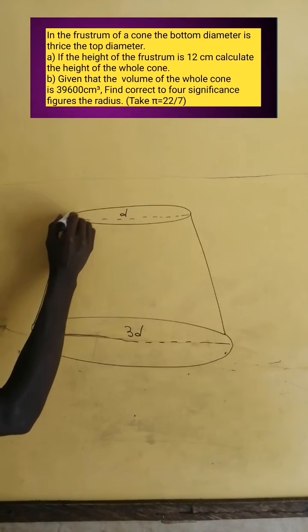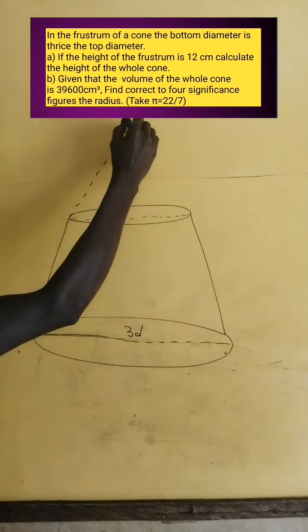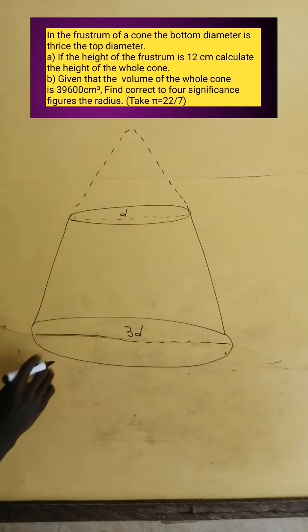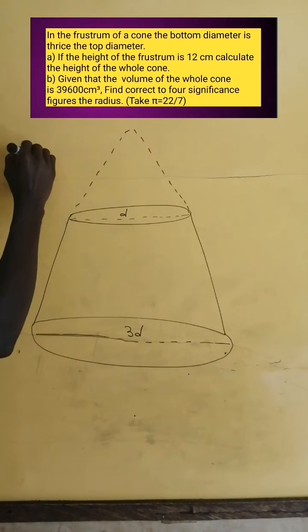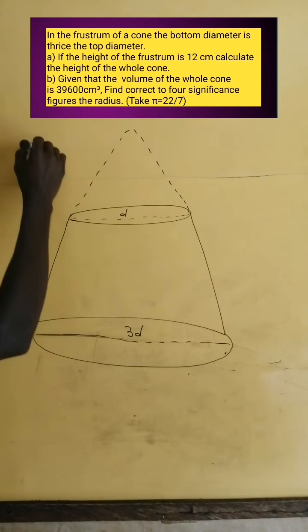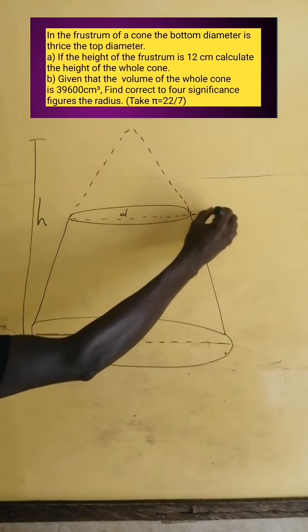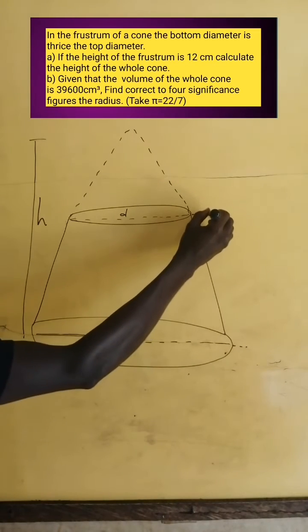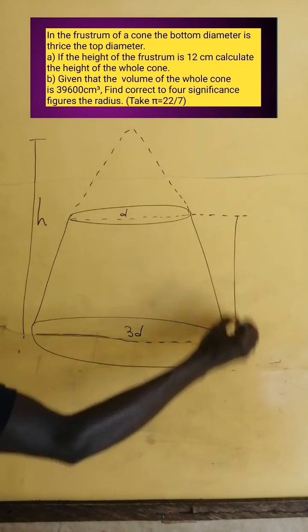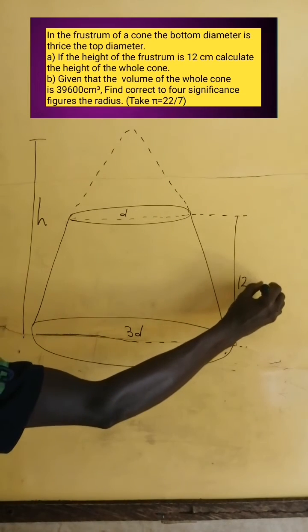Let us extend this part to meet this part, so that we can get the whole cone. That's the view of the whole cone. From the top to the bottom is the height of the whole cone. Let's name it H. And from this point up to the base here is the height of the frustum, which is 12 centimeters.